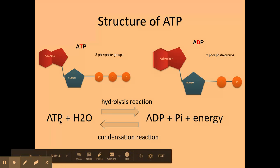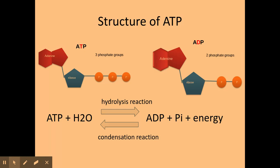We can reform ATP through condensation reactions involving the removal of water from ADP. It's worth bearing in mind throughout the respiration topic that ATP is made at substrate-level phosphorylation, but also through chemiosmosis, which we'll learn about as we go through.